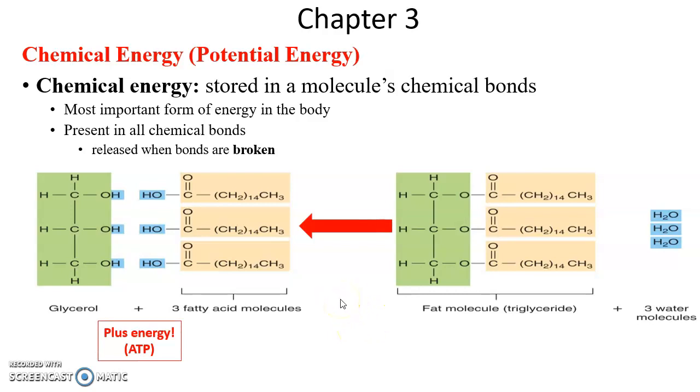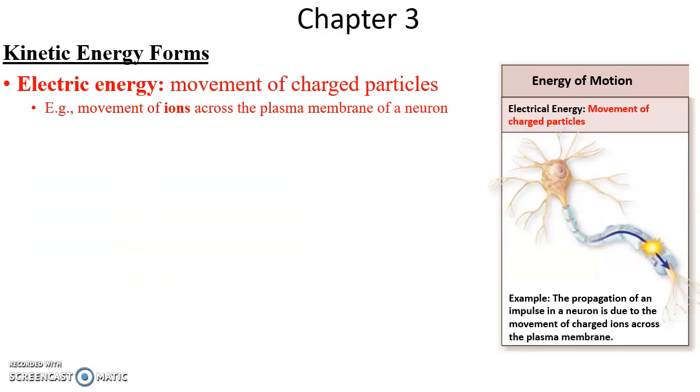Breaking bonds produces energy. Electric energy is just the movement of charged particles. When we talk about electricity in our walls, that's the movement of electrons, which we know are negatively charged. But for cells, the movement is of ions, of charged atoms, often moving across the plasma membrane—for instance, the sodium ions moving across the membrane.